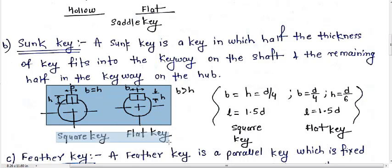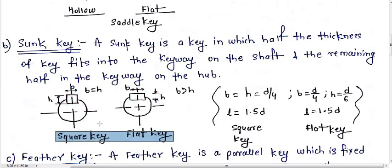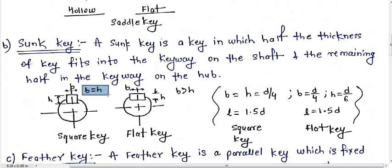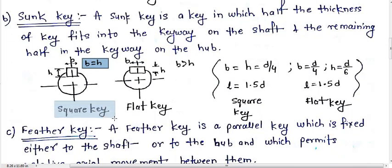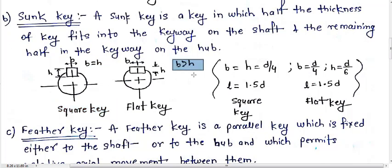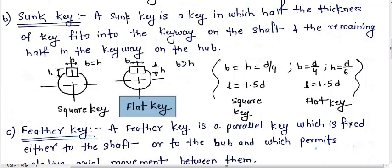A sunk key can be categorized into two parts: square key and flat key. In a square key, the height and width are equal — if b is the width and h is the height, then b equals h. In a flat key, the width of the key is greater than the height of the key.